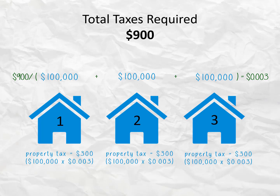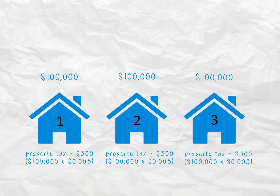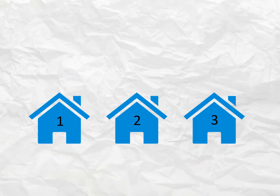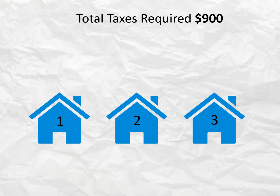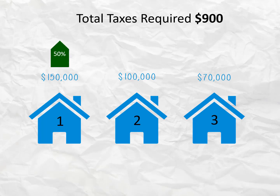This looks simple, but let's see what happens the following year when assessed values change but the total combined taxing district's budget stays the same at $900. House number one is now assessed at $150,000, house number two at $100,000, and house number three at $70,000. House number one's assessed value increased by 50%, house number two's value stayed the same, and house number three decreased by 30%.